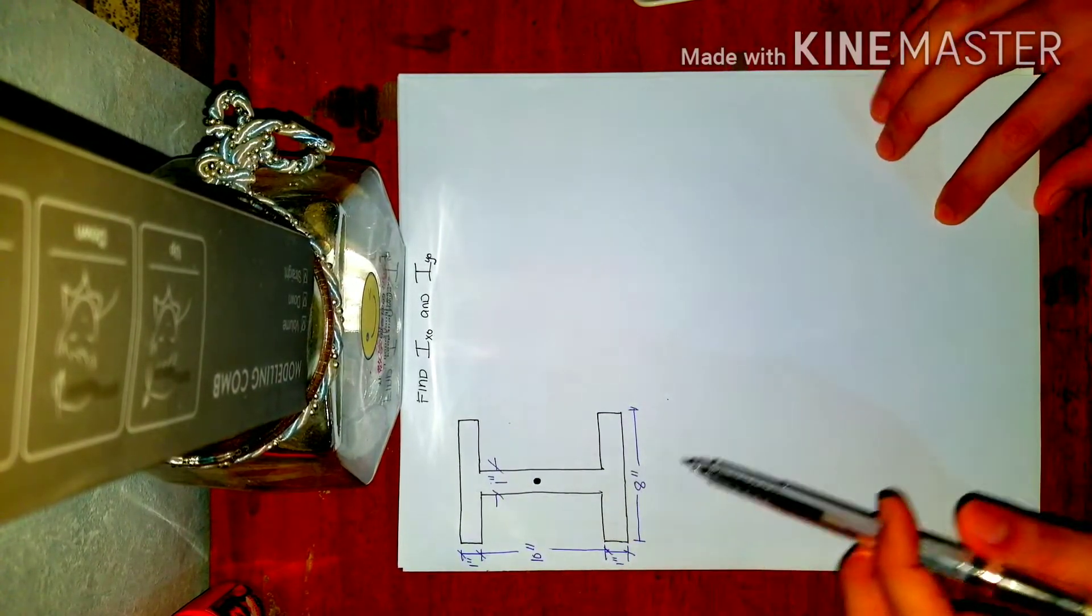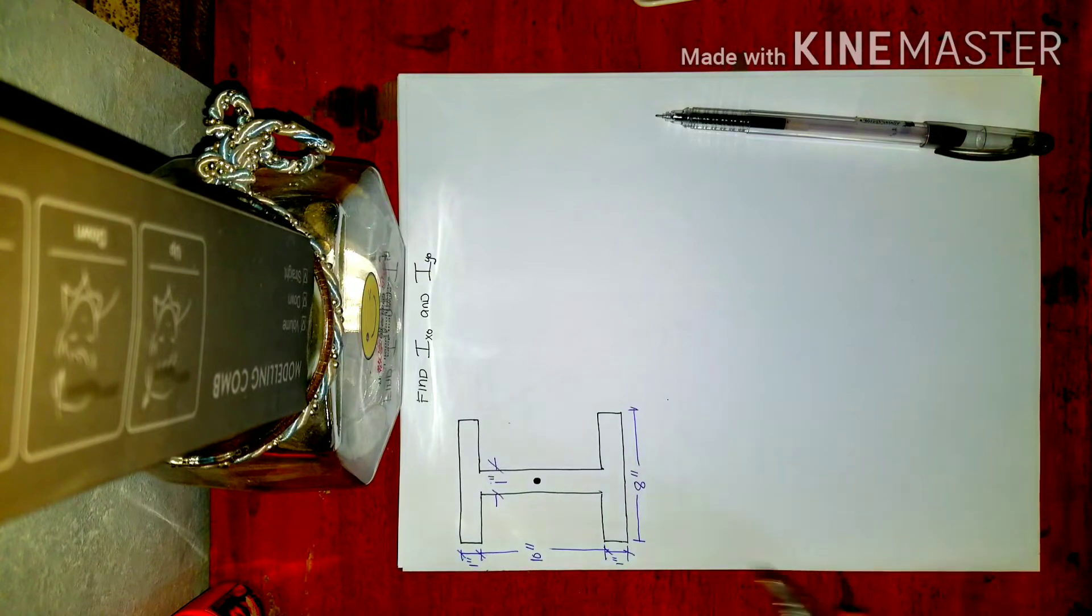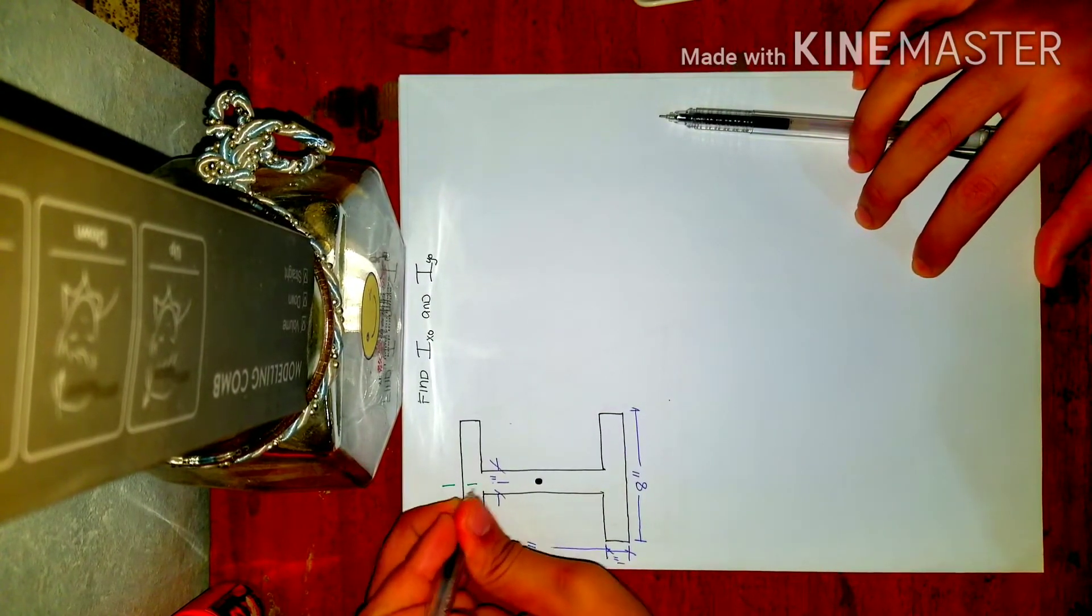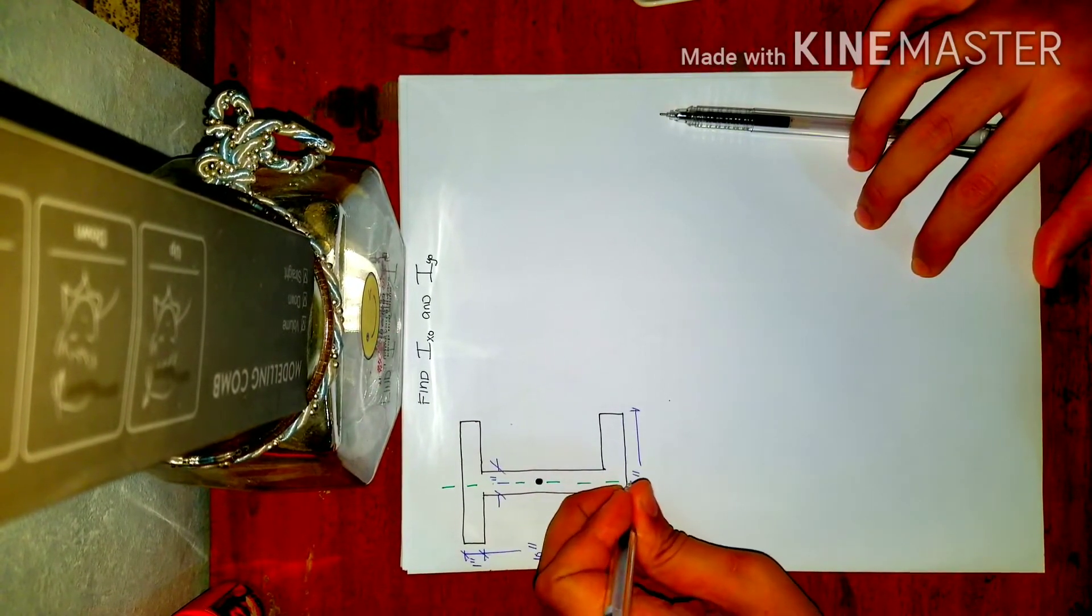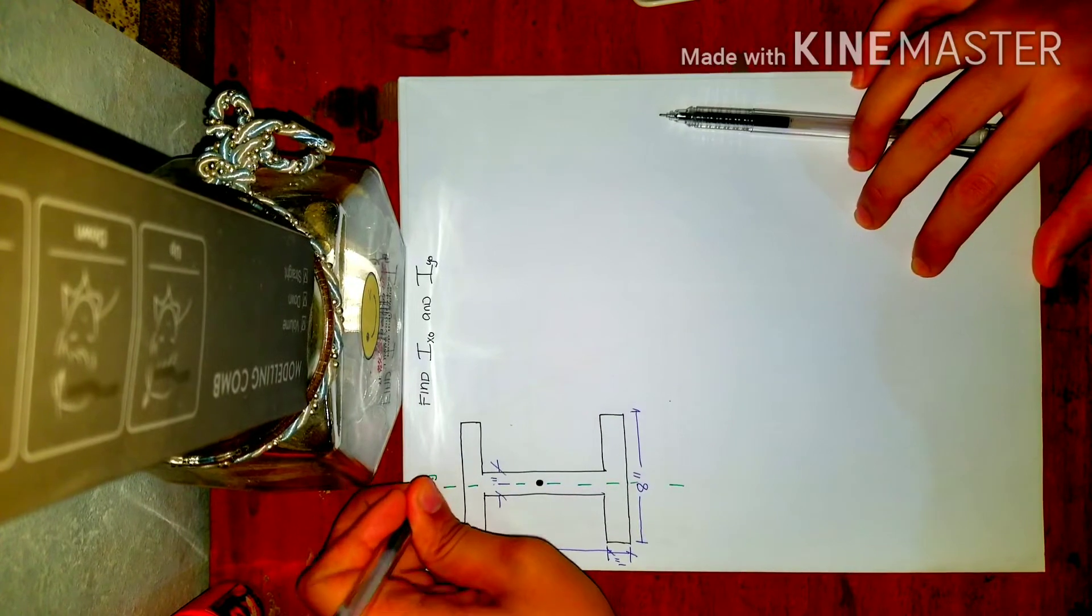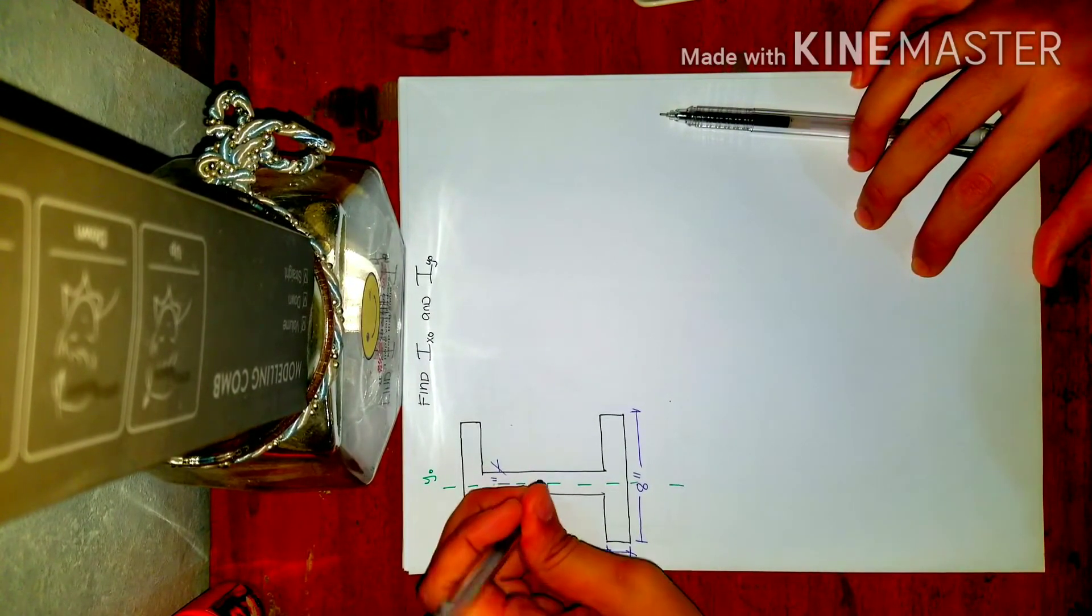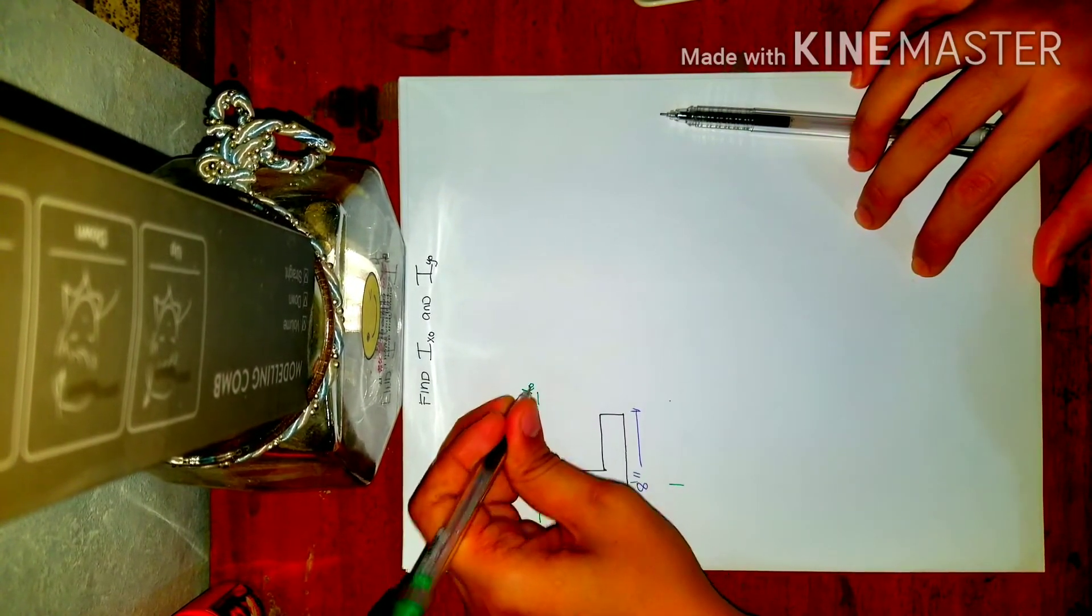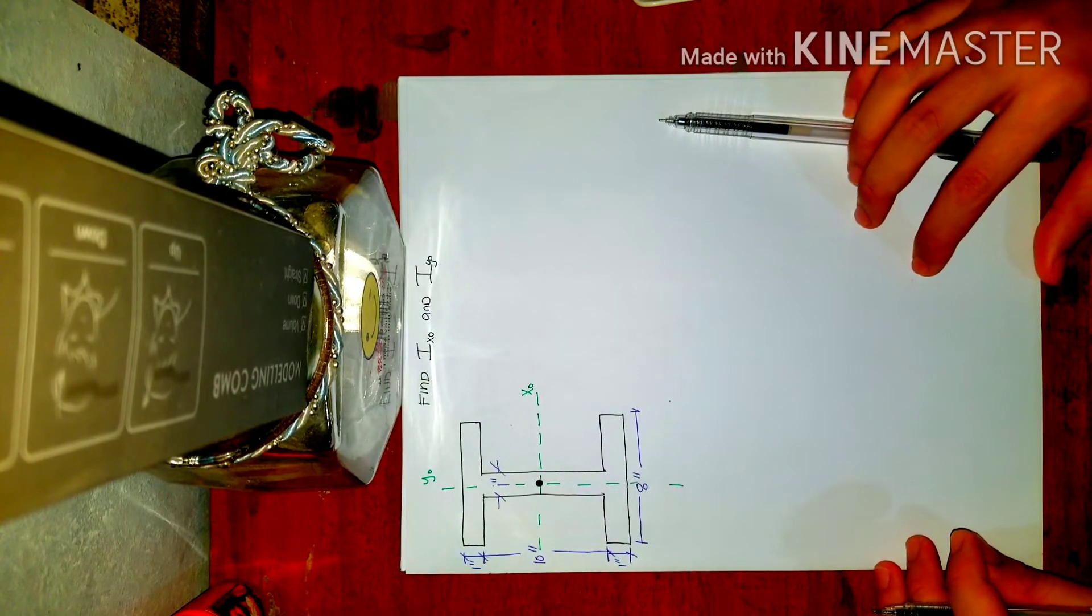So since it's in the middle, let's mark it. This is your y-axis, we'll call this y-sub-o. And this is your centroidal x-axis.